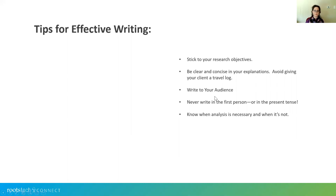Here are some tips for effective writing. First, stick to your research objectives. Second, be clear and concise — avoid giving your client a travel log, which we'll talk about in a minute. Third, write to your audience. If you're writing for a client who hired you, chances are high they are not an expert in genealogy. Generally, a client that hires you does so because they don't know how to do it themselves. Finally, never write in the first person or present tense, and know when analysis is necessary and when it's not.